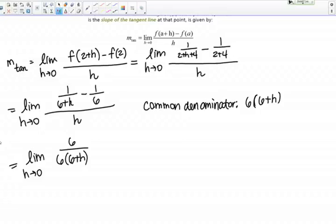My second fraction needs the factor of 6 plus h. So that's going to become 6 plus h over 6 times 6 plus h. And then of course, that's all over the h in the denominator.